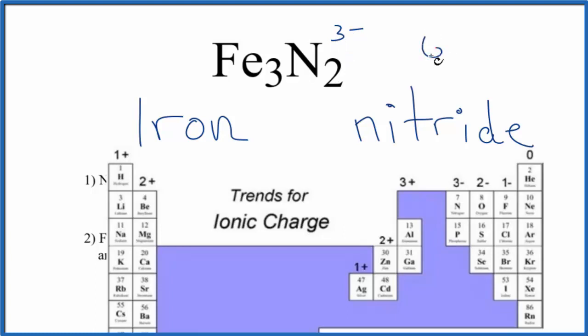2 times 3 minus, that's 6 minus. So we need a 6 plus over here to give a net charge of 0. 3 times 2 plus, that would give us 6 plus. So the charge on the iron is 2 plus.